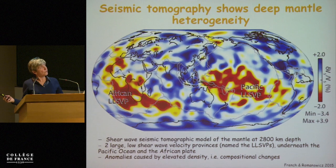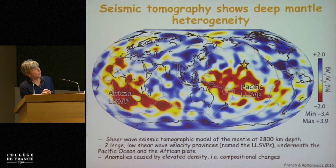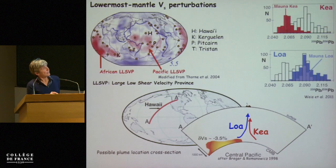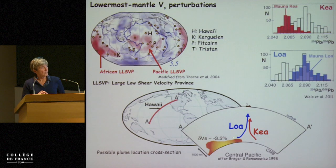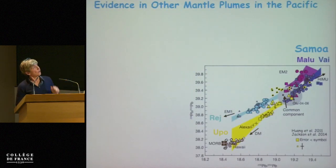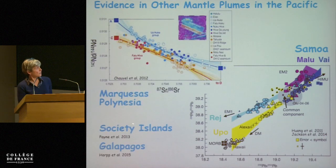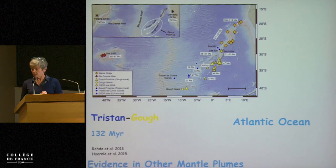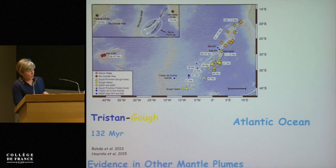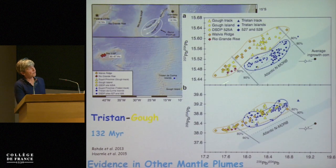Putting this into a broader perspective: you're all familiar with the distribution of the two LLSVPs, and critically, Hawaii sits at the northern limit of the Pacific LLSVP. This is how we came up with the idea that the difference in composition between Loa and Kea comes from the fact that Loa is on the side of the Pacific LLSVP. Since then, these occurrences of two compositional chains of volcanoes have been shown in Samoa, the Marquesas, the Society Islands, and the Galápagos — so this is not limited to Hawaii. You see the same thing in the Atlantic, with a difference between Tristan and Gough, which is also nicely reflected in isotopic signature.